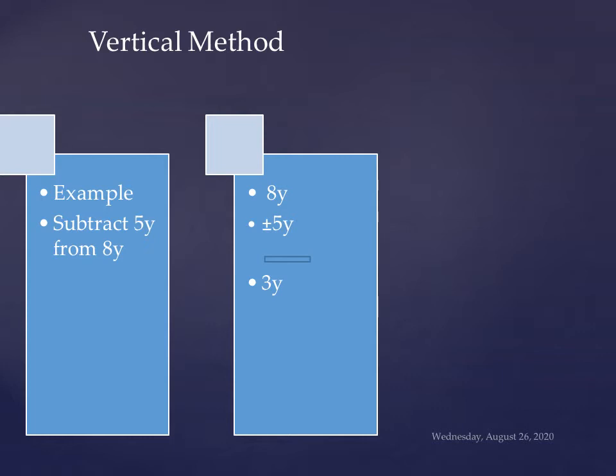Now we are changing the sign of second term. The sign is plus so it will change into minus. Plus change into minus. Now we will not consider the old sign of 5y. Now we consider the new sign minus. So 8y is plus and 5y is now minus. Two opposite signs will be subtracted.